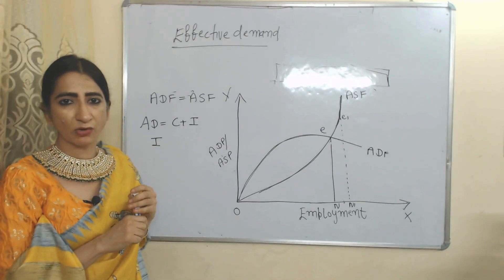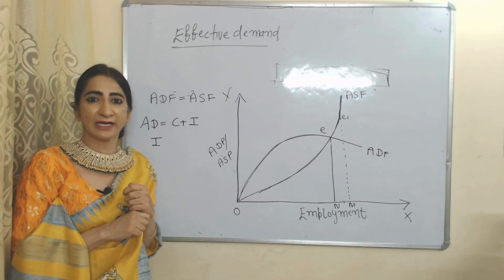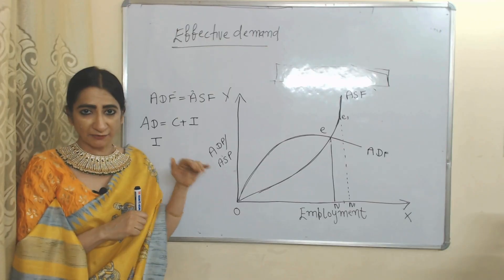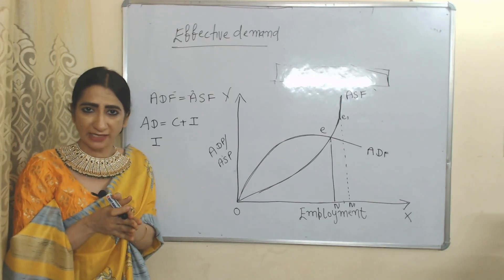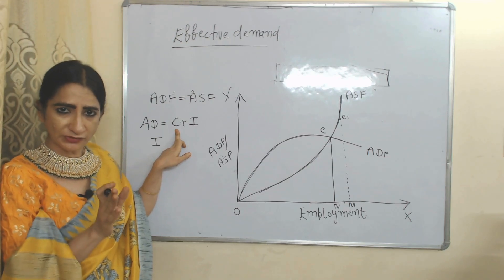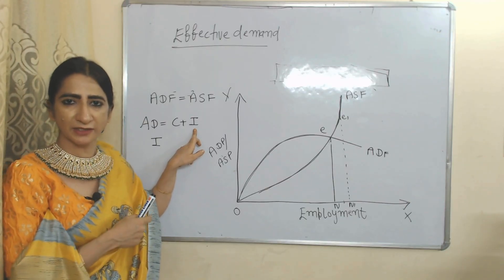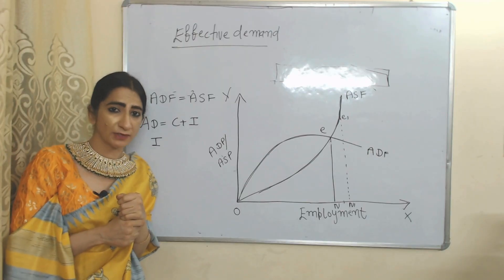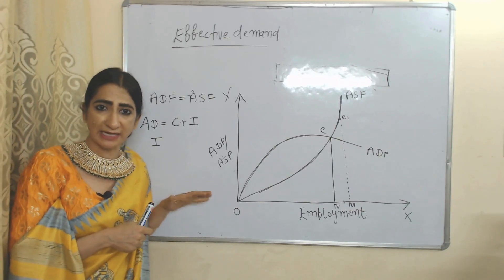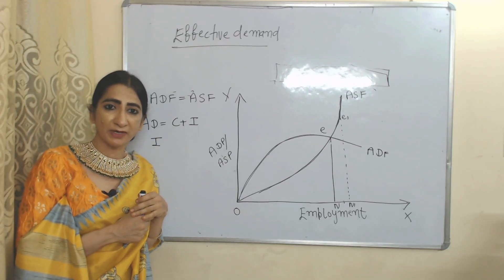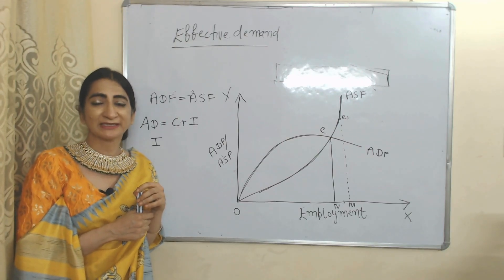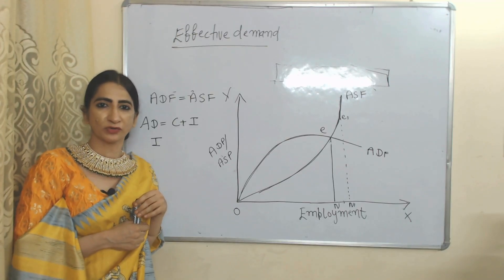According to this theory, the main cause of unemployment is lack of aggregate demand. Since aggregate demand equals C plus I, and during the short time period consumption is constant, we can increase aggregate demand by changing investment. However, the private sector will not invest because it is influenced by profit motive — if demand is already low, why would it invest? So the government must intervene, and investment done by government is called autonomous investment. That is why Keynesian theory mainly focuses on autonomous investment.